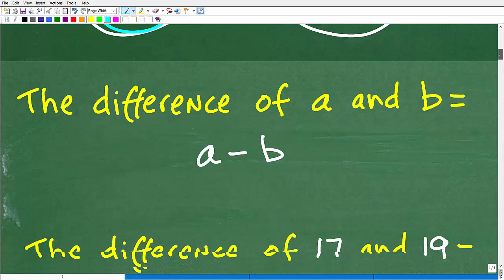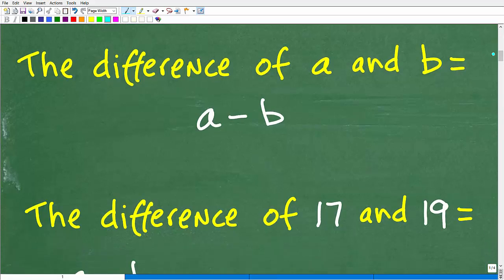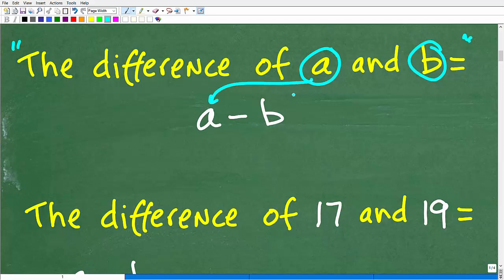And matter of fact, let me go ahead and show it to you right now. So the difference of A and B, and A and B are two numbers, and look at the order of this sentence here, right? So it's the difference of A and B is equal to A minus B. So the number, the first number comes first, and the second number comes second.